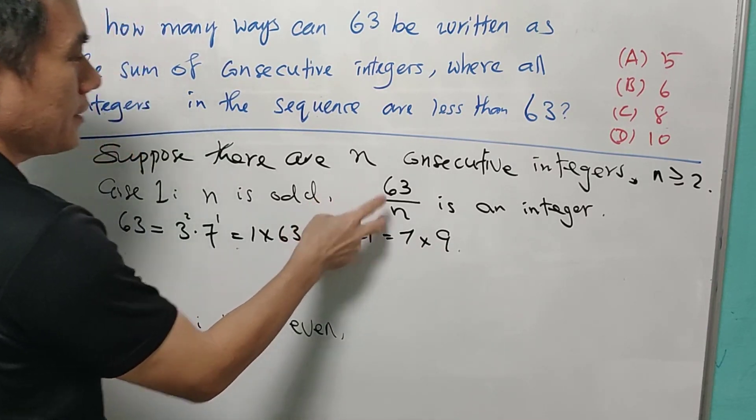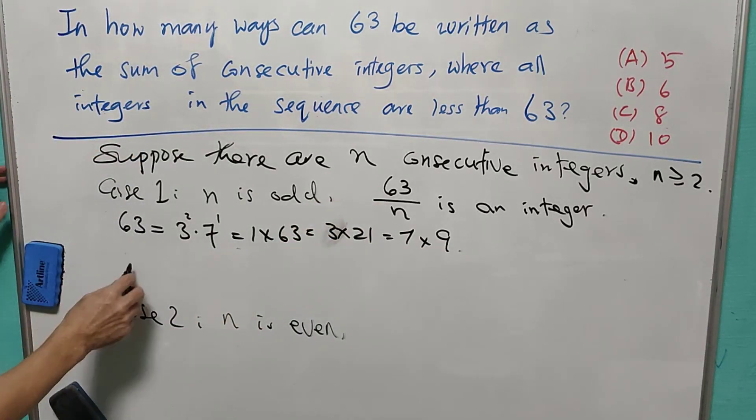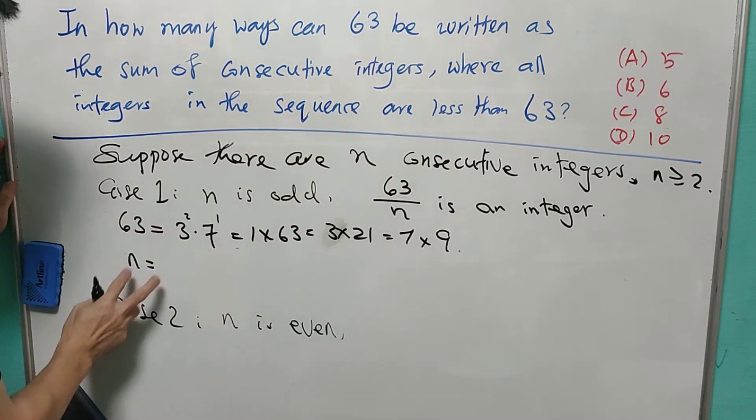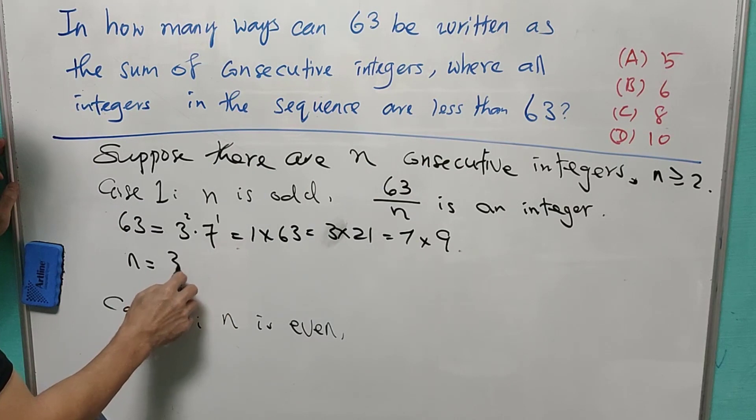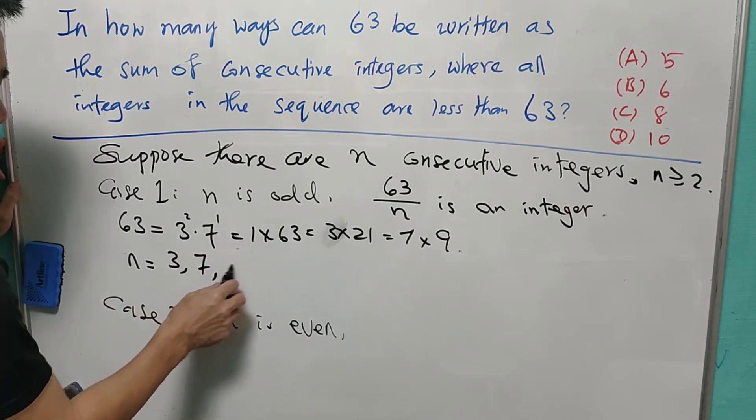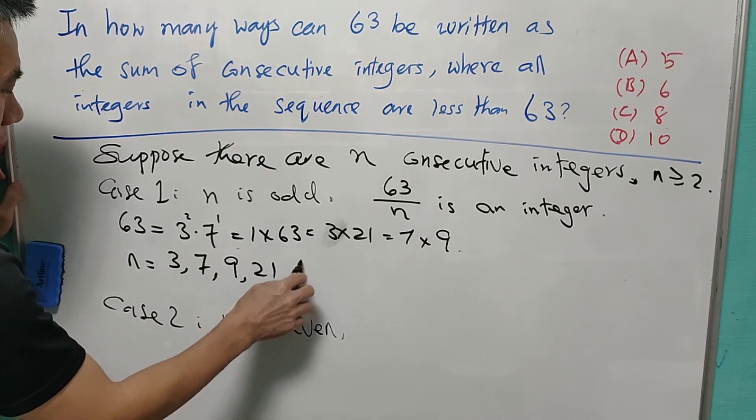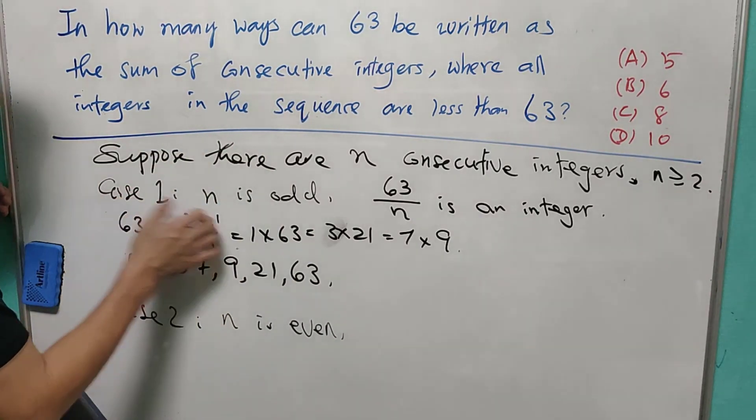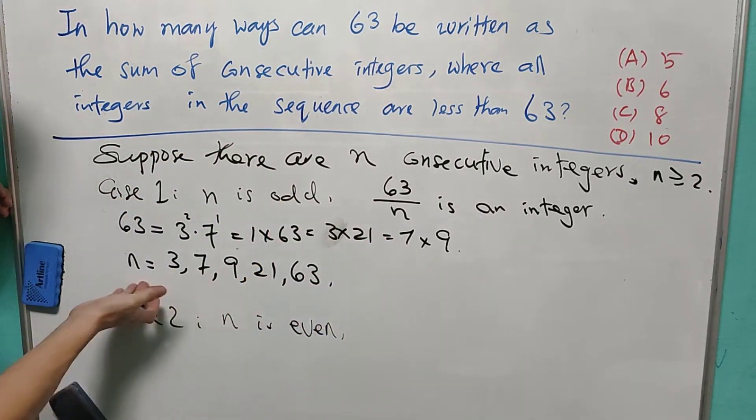Since 63 over n is an integer, meaning that n can be equals to 1, that is not possible. Since n is at least 2, n has to be equal to 3, 7, 9, 21, or 63. So we know that for case 1, there will be 5 possible cases.